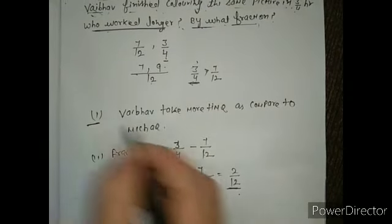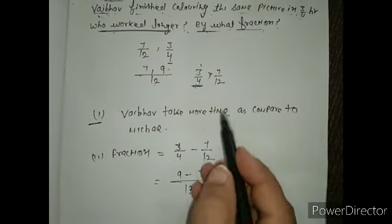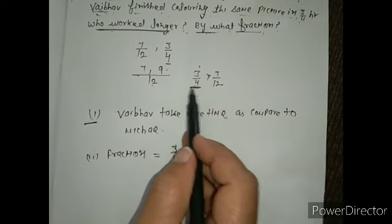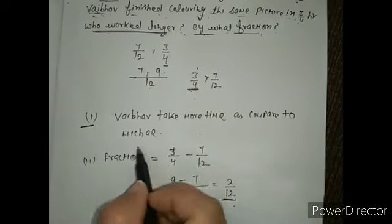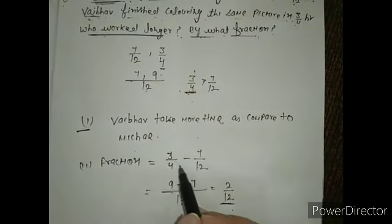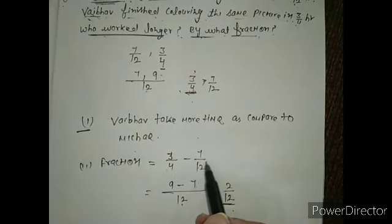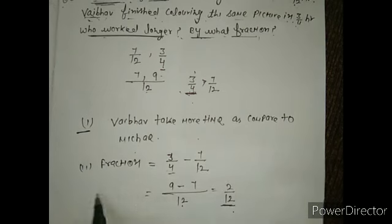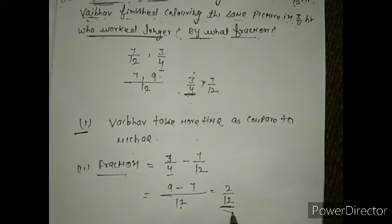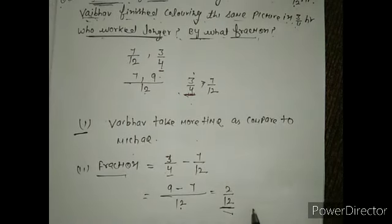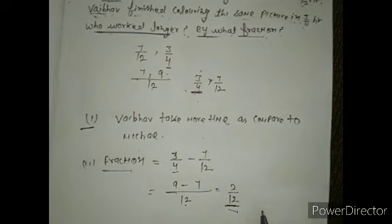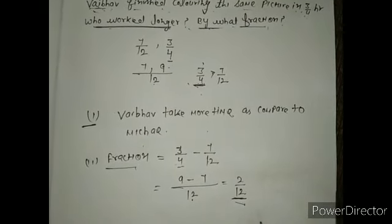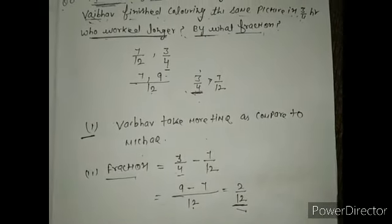So first we did the comparison, then we found which one is more — 3/4 is more. Then we subtracted 7/12 from 3/4 to find the fraction by which Vaibhav took more time. I hope you can do this exercise with the help of this explanation.